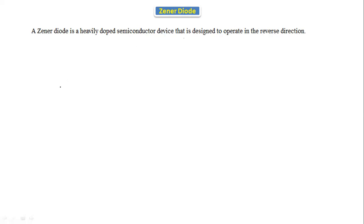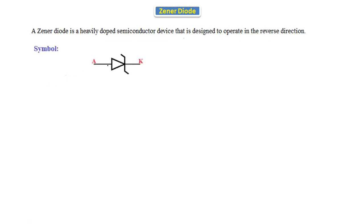Now, what is that special purpose, and how does the Zener diode behave in forward bias and how does it behave in reverse bias? If you see the symbol of the Zener diode, this is the symbol. It has an anode terminal and a cathode terminal.